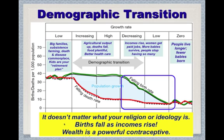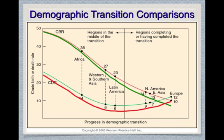The key point of the demographic transition is that it really doesn't matter what your religion or ideology is — whether you're pro or anti population growth. The fact is that births fall as incomes rise regardless of religion or ideology. Wealth is a powerful contraceptive. People want fewer kids and more money to spend on them — higher quality rather than higher quantity.